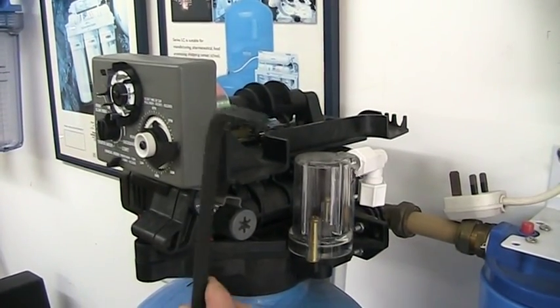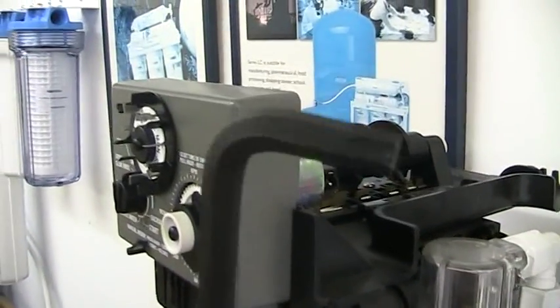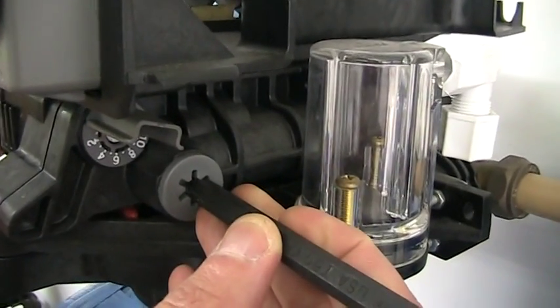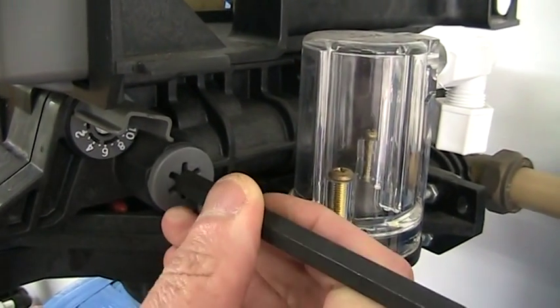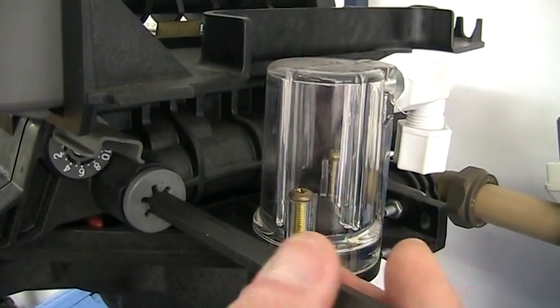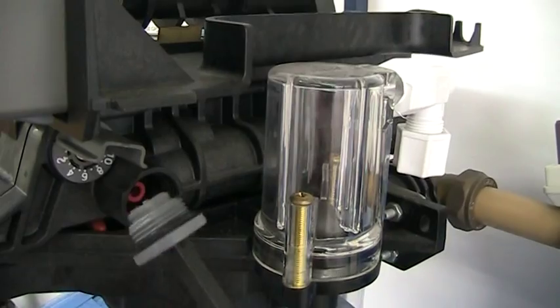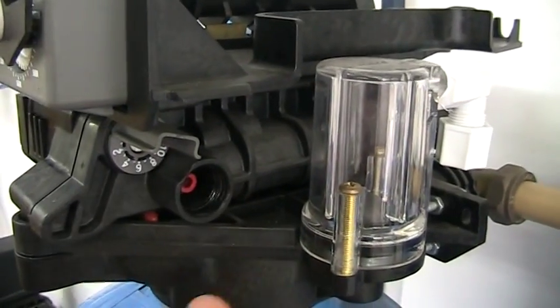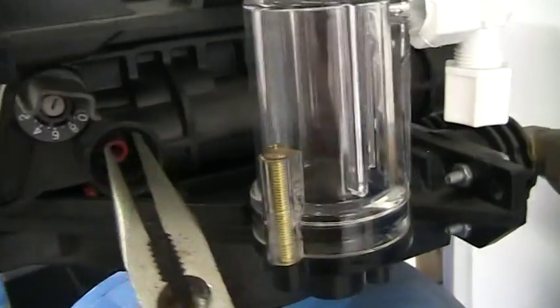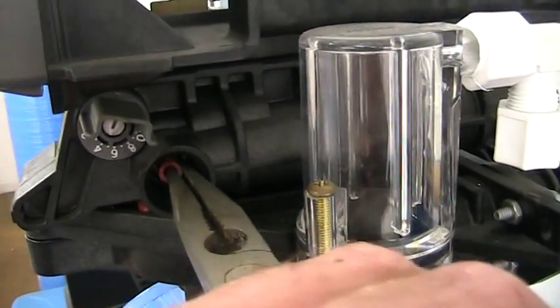Every unit that's sold is supplied with a little allen key like this, and that fits your caps here and your screen on the other side. So open your screen. In most cases, you'll always have some drip of water here. With a pointy nose pliers, grab your injector and withdraw it.